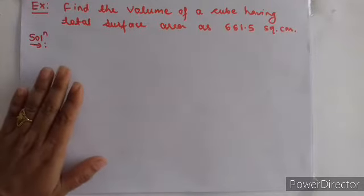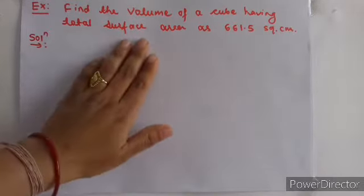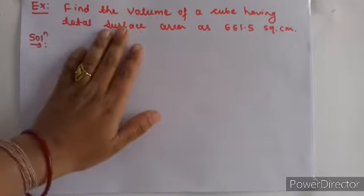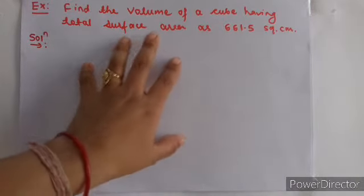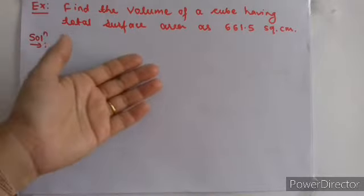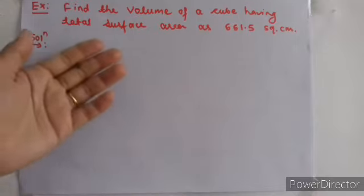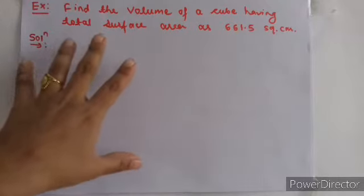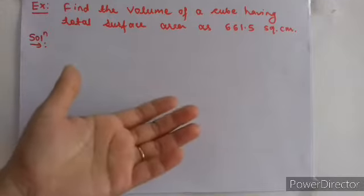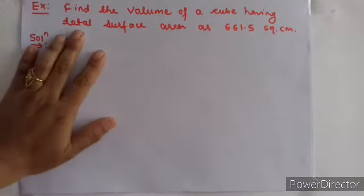Let us start our today's class on examples on regular solids. हम regular solids के examples solve कर रहे हैं, जिसमें हमने cuboid के examples solve किये, previous lecture में हमने cube के भी examples solve किये. Previous video में हमने find total surface area या फिर surface area, and volume of cube solve किया. Cube कैसे होता है — उसके सारे के सारे sides equal होते हैं. वो space occupy करता है उसे volume होता है. आज के lecture में हम एक नया example देखने वाले हैं.